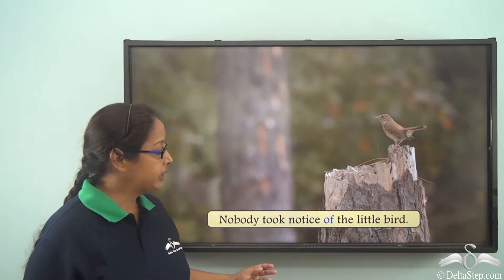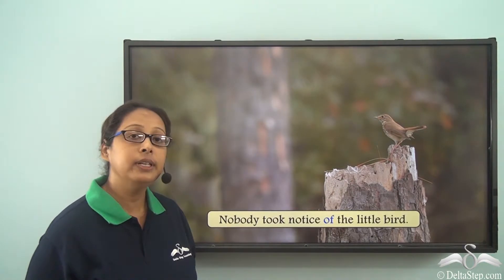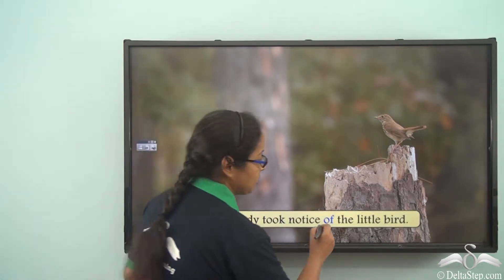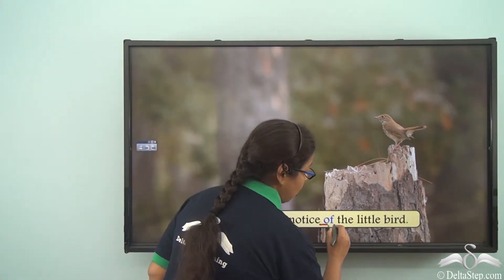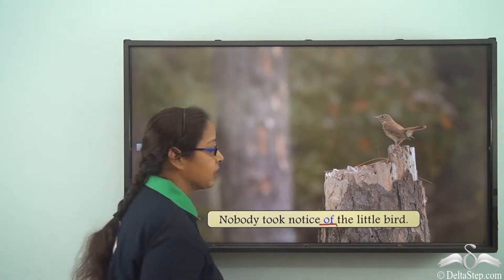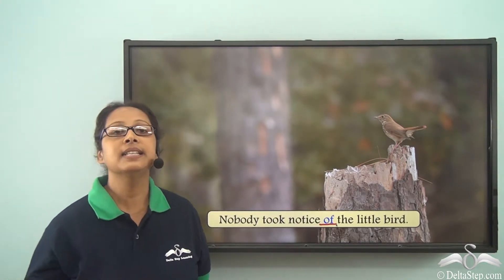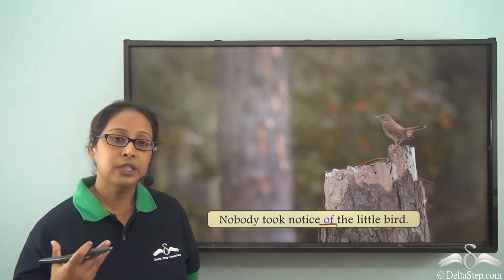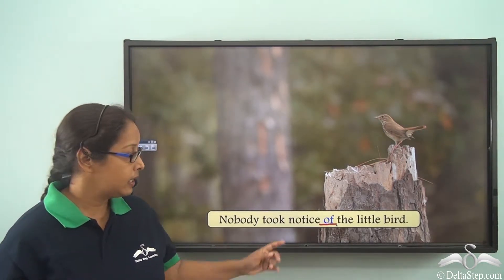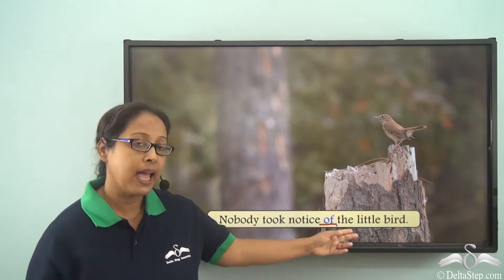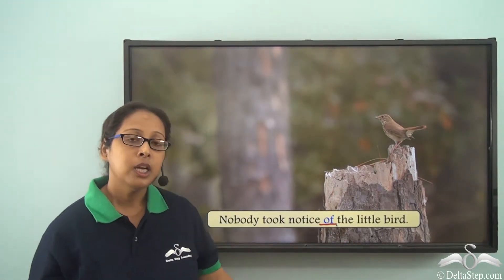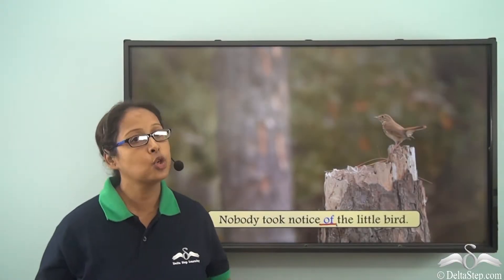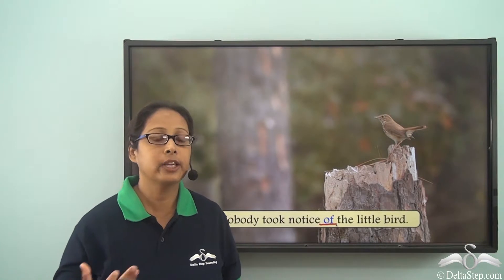Nobody took notice of the little bird. So the preposition here is 'of', and 'of' is telling us the relation between 'notice' and 'the little bird'. So 'of' is used to show that connection.